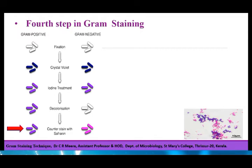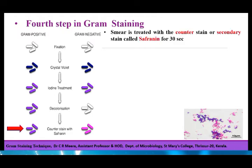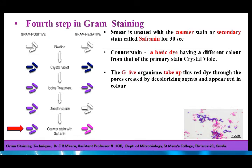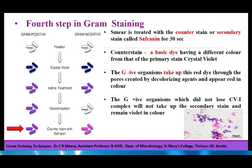In the fourth and final step of Gram staining, the smear is treated with the counter stain or secondary stain called safranin for 30 seconds. The counter stain is usually a basic dye having a different color from that of the primary stain crystal violet. Safranin is the most commonly used counter stain in Gram staining procedure. The Gram negative organisms, which have lost the crystal violet-iodine complex, take up this red dye through the pores and appear red in color. The Gram positive organisms, which retained the crystal violet-iodine complex, do not take up the secondary stain and remain violet in color.